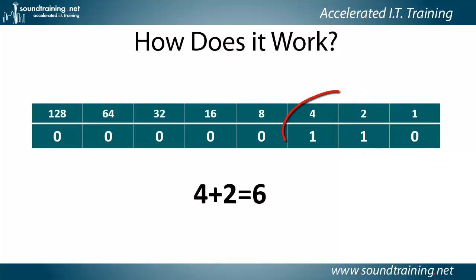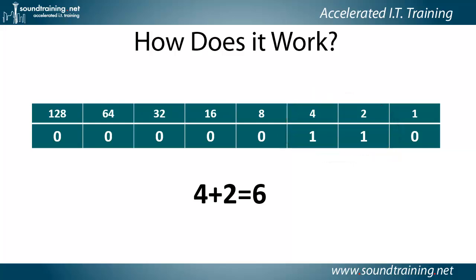Here's another example. In this case the 4-bit and the 2-bit are turned on. 4 plus 2 equals 6, so the decimal value of the byte is 6. And one final example: the 32-bit and the 2-bit are turned on. 32 plus 2 equals 34, and that is the decimal value of this byte.